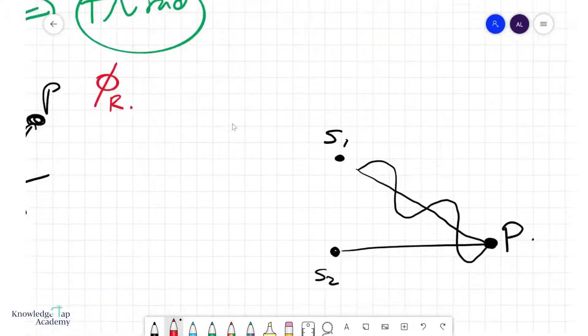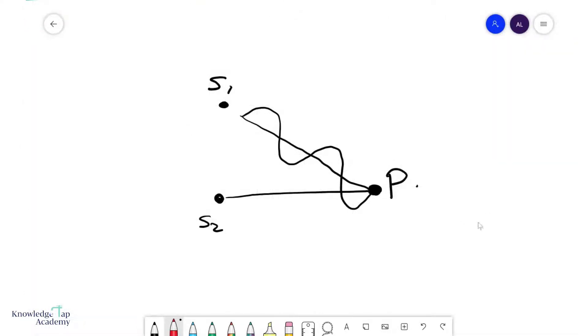Now, finally, but also the most important thing, right, is there's also the phase difference due to something called path difference, which we are going to call ΔL. Now the path difference is simply the difference in the path lengths here and here.